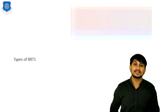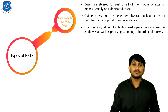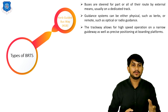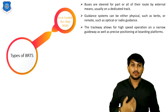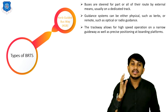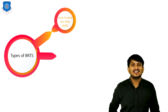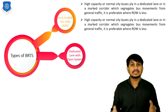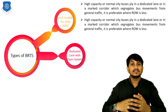There are various types of BRTS. The first type is the kerb-guided busway, or KGB type. In this type, buses are steered for part or all of their route by external means, usually on a dedicated trackway. Guidance systems can be either physical such as kerbs, or remote such as optical or radio guidance. The trackway allows for high-speed operation on a narrow guideway as well as precise positioning at boarding platforms.